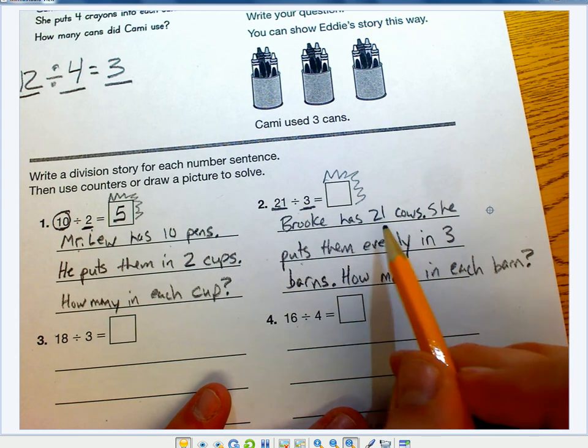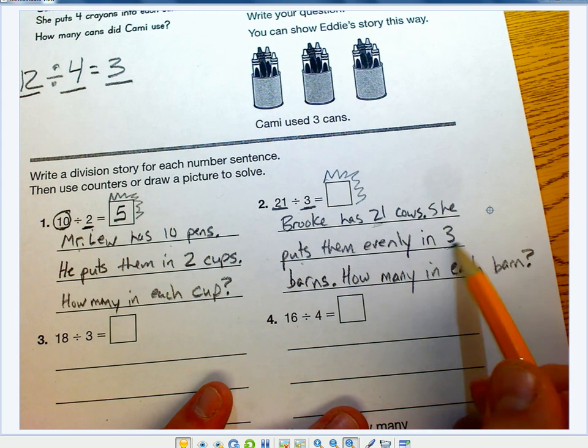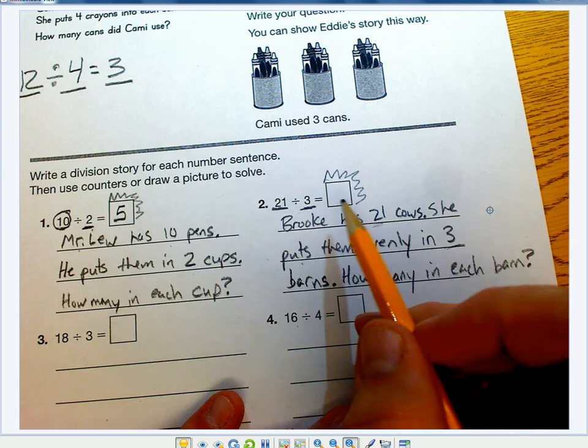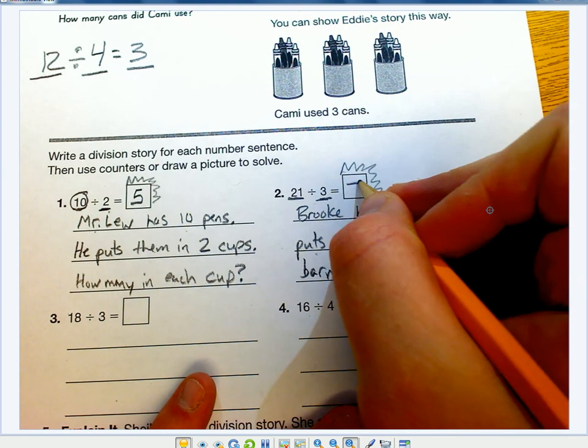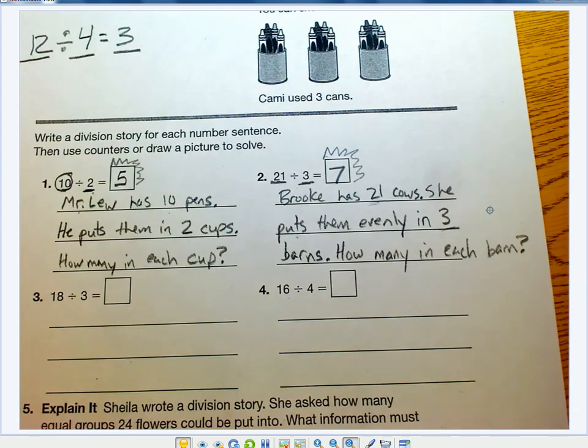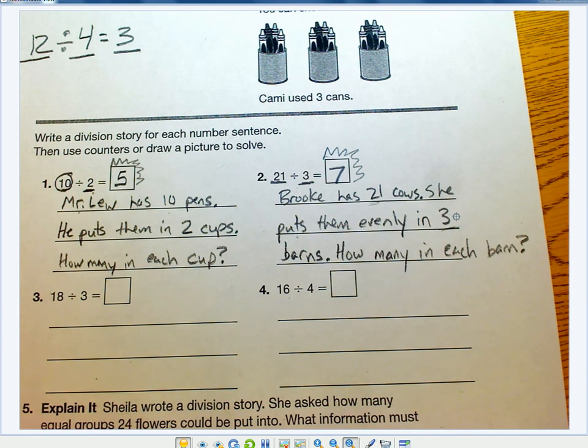So, I have my total number, amount of groups, and then how many in each. That's going to be 7 cows in each barn. Keep that in mind: total number, amount of groups, how many in each.